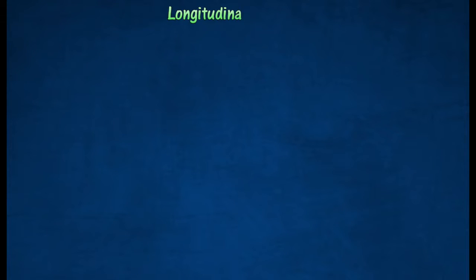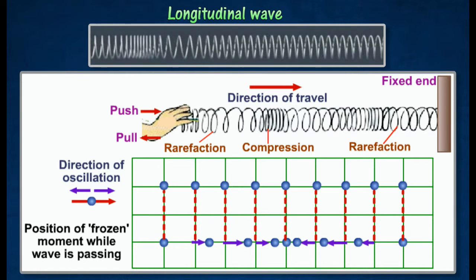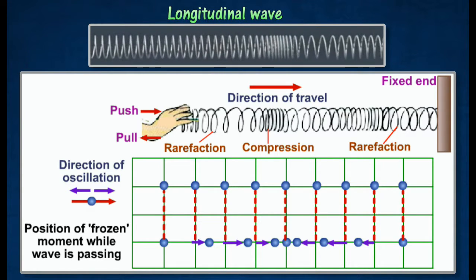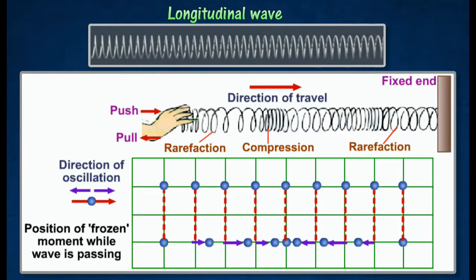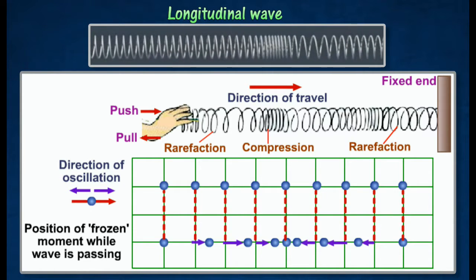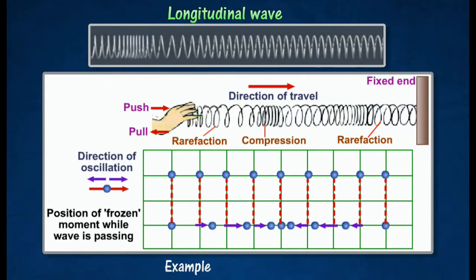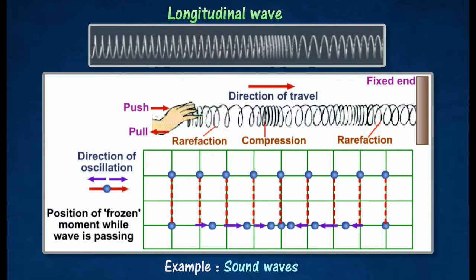The diagram shows a set of longitudinal waves produced by vibrating the spring in a to-and-fro direction. A longitudinal wave is a wave in which the particles of the medium move in the direction parallel to the direction in which the wave moves. An example of longitudinal waves is sound waves.